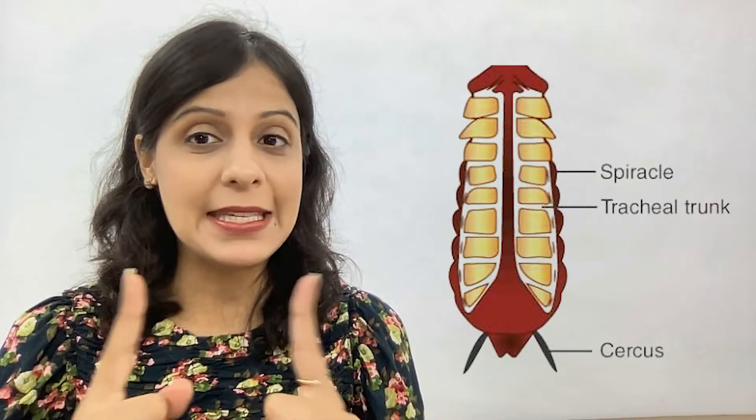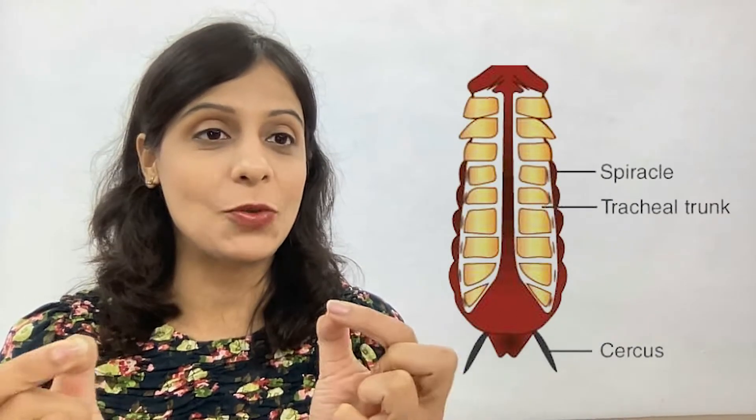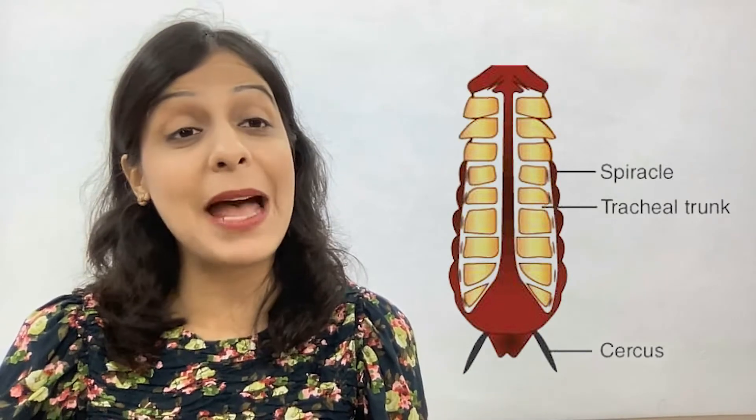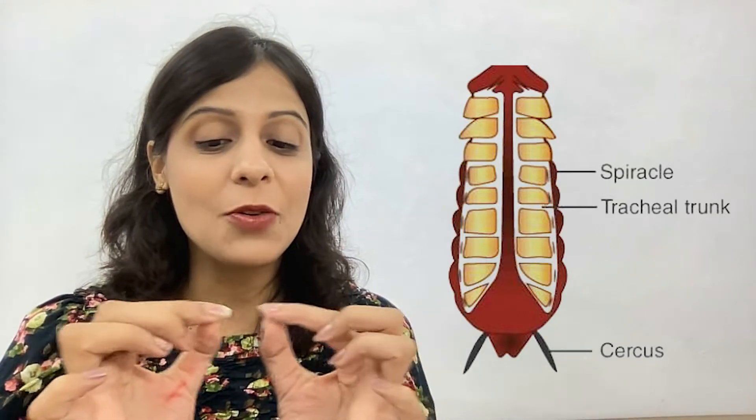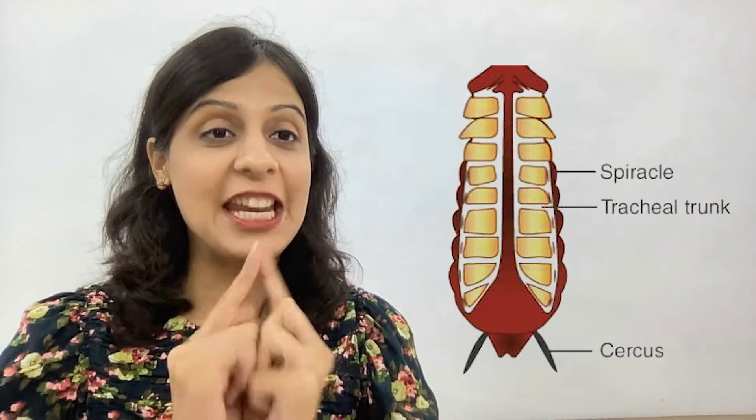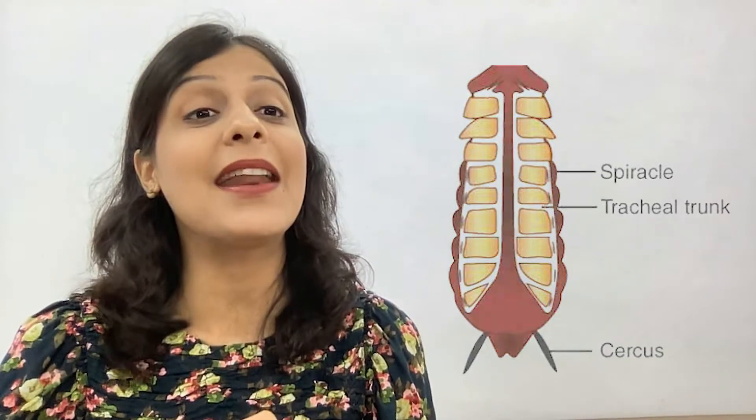Today we will learn about cockroaches and earthworms, and then aquatic animals which live in water — like fish — and how they breathe. On the sides of a cockroach's body, there are small openings which we call spiracles. These spiracles are linked in a network which we call the trachea.